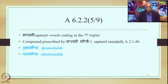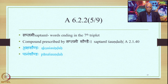The next environment is Saptami, referring to words ending in the seventh triplet, with the compound prescribed by the Sutra Saptami Shaundaihi, 2.140. The examples are Akshashaundaha and Panashaundaha. In Akshashaundaha, Ksha is Udatta and that becomes the accent of the entire Samasa; A is Anudata and Shau is marked with Swarita. In Panashaundaha, Pa is Udatta and therefore Na is shown as Swarita. In Shaundha, both vowels are Anudata and because they follow the Swarita, they remain unmarked.